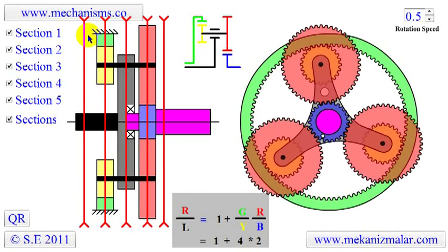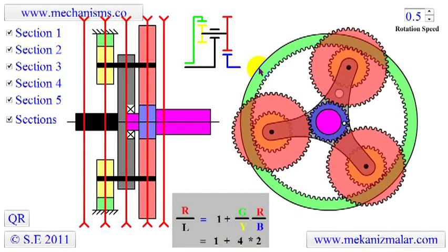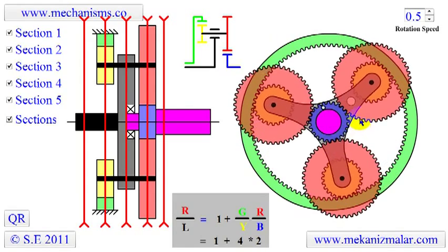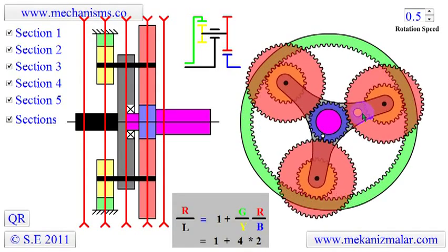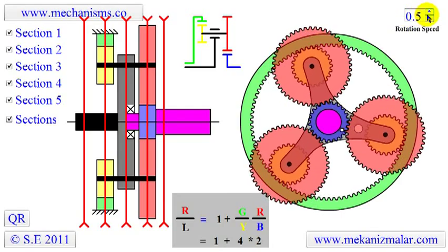We can see this by counting the total number of rotations the small white dot makes during one revolution of the large white dot. Count the rotation.